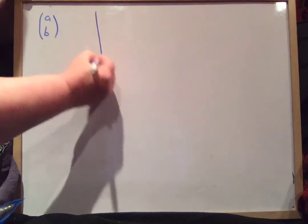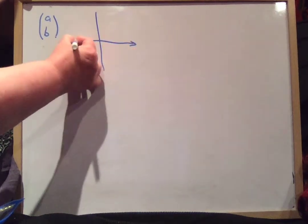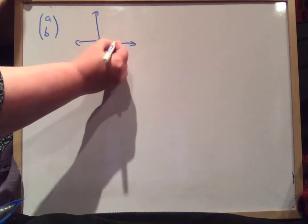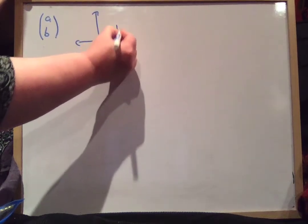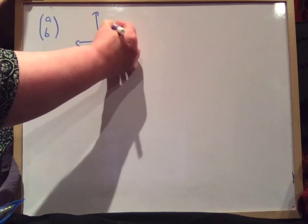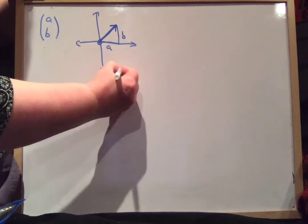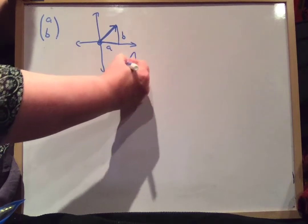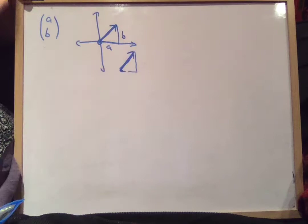Remember that if you have a vector (a, b), this means that on your x-y coordinate system, your vector — if it starts here — goes over by a and up by b, and your vector is this vector here. That's your vector (a, b). If it starts over here, it still goes over by a and up by b, and it looks like that. So that's your vector (a, b).